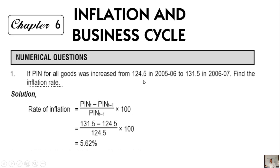So the current year PIN is 131.5 and the previous year PIN is 124.5. Calculation: (131.5 minus 124.5) divided by 124.5, into 100. The result is approximately 5.62%. That is the answer to question number 1.